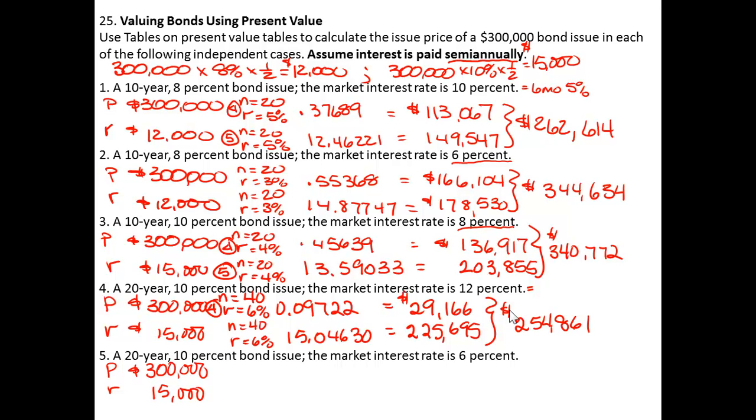And for the last one, my N is going to be equal to 40 because it's a 20 year bond. And the interest rate is going to be equal to 3% since the annual rate is 6. So going to Table 4 again, I find a value of 0.30659. And going to Table 5, I find a value of 23.1147.